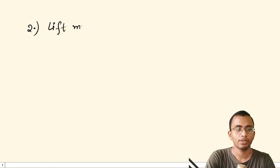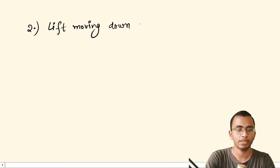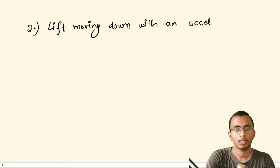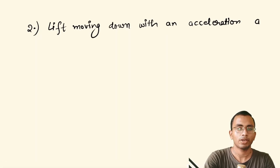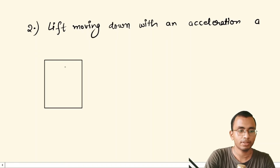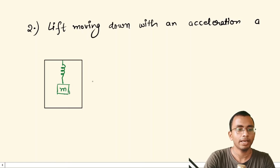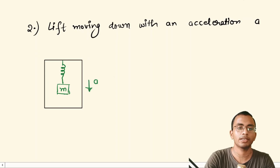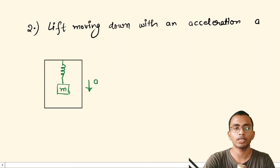In the second case, the lift is moving down with acceleration a. Again we show the lift with the spring hanging inside, which we are using to weigh the mass. This is our mass m, and this entire system is moving down with acceleration a.